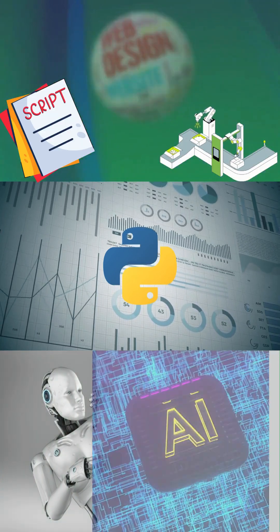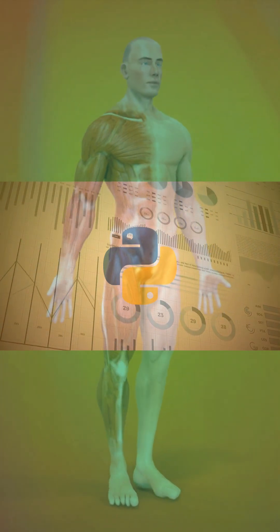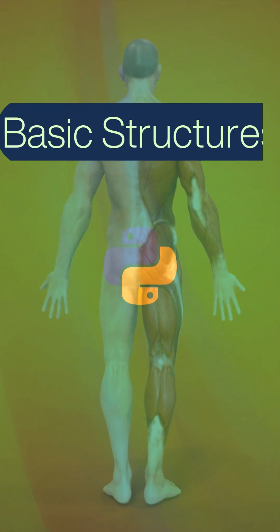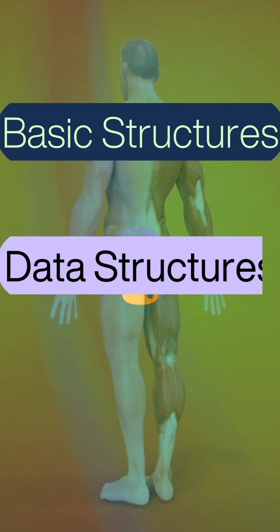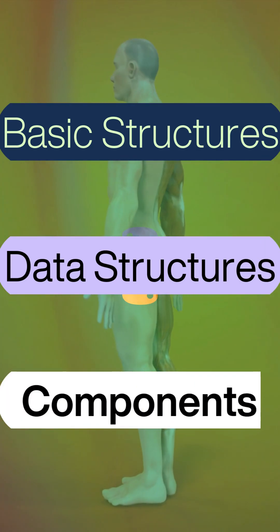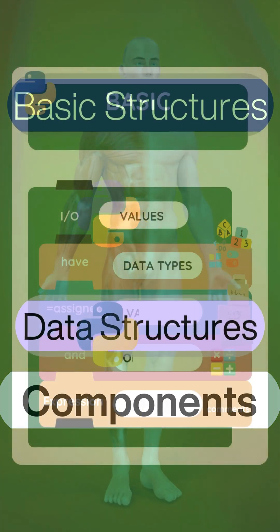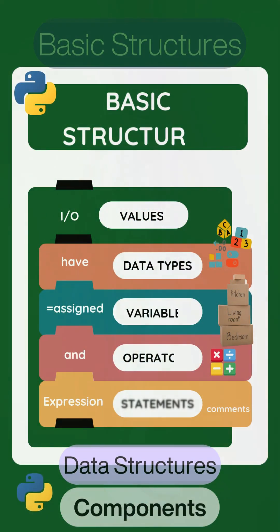As seen before in coding basics, Python anatomy includes basic building blocks, data structures, and larger components ranging from data types, values, variables, and statements.